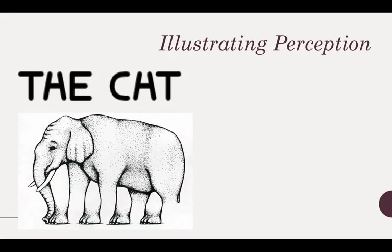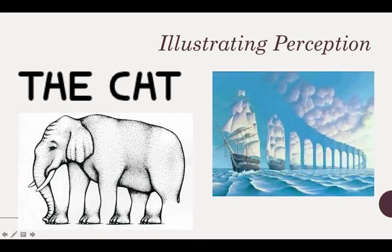What do you see here? You probably see an animal — an elephant — and you'd say he has four legs. But if you look much more closely, that's a little bit deceptive and it's hard to tell exactly how many legs it has. And you probably see both a bridge and ships. There are all kinds of visual illusions that tell us something about perception.